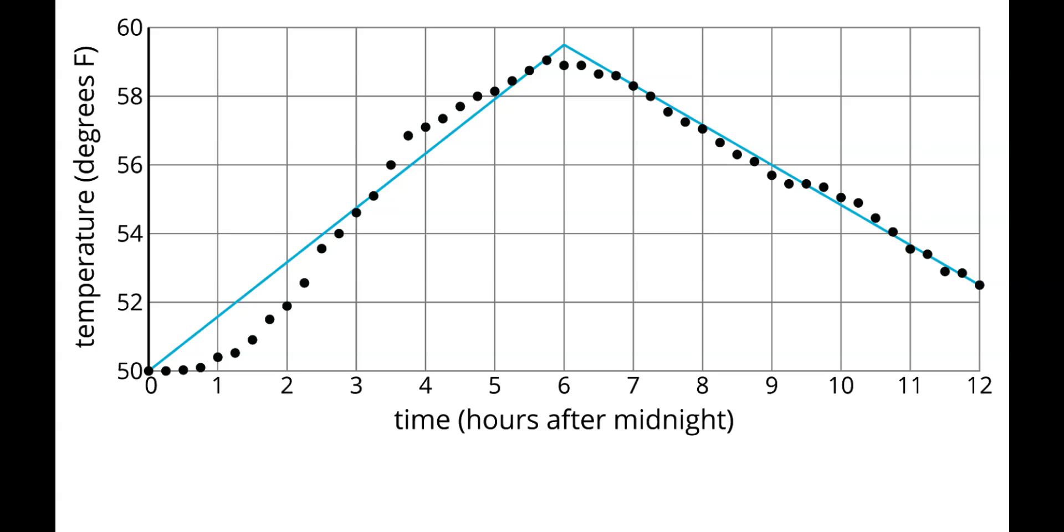In the real world, data points do not always make an exact line. From a previous lesson, this graph shows temperature in degrees Fahrenheit as a function of the time of day. Notice that the data points do not make a straight line on their own.